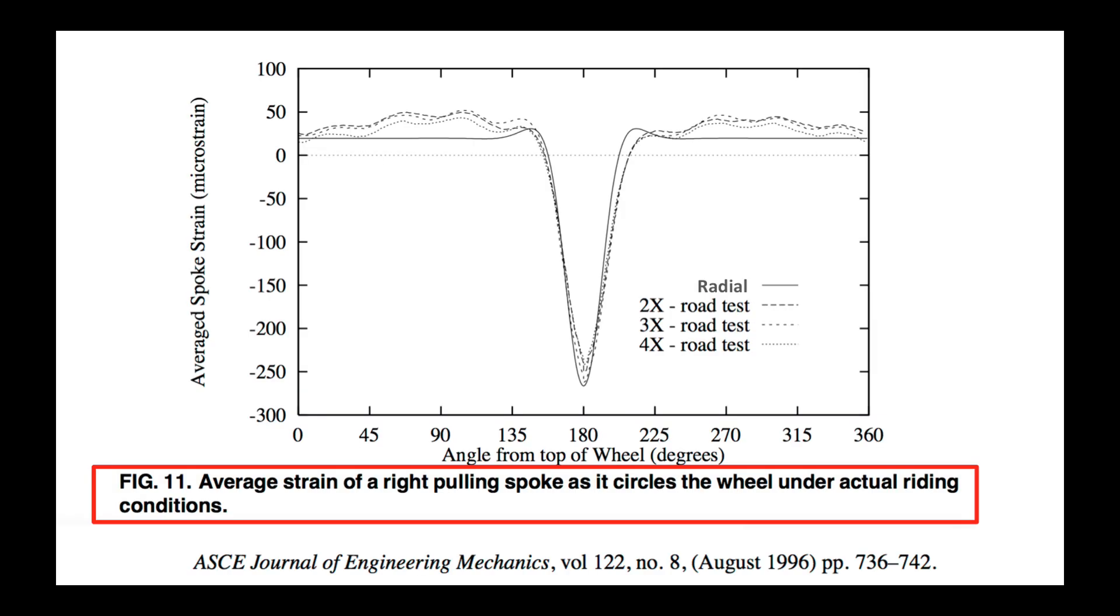Here also we see a close agreement with Henry Gavin's dynamic on-road testing and my laboratory testing. As a spoke goes through the bottom of the load bearing zone, whether the wheel is laced radially or with a two cross, three cross, or four cross yields very little difference in the results.